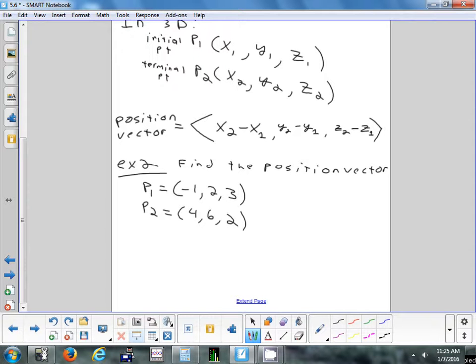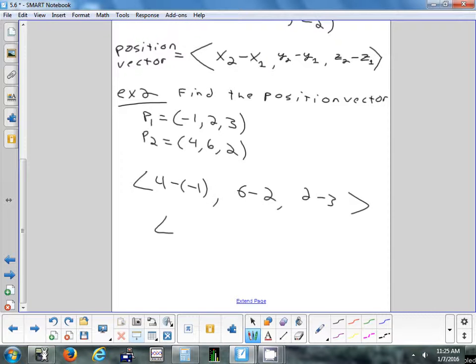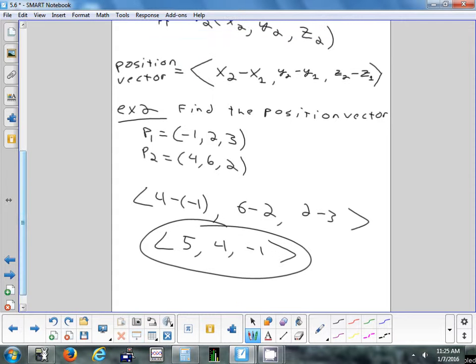All right, so we'll just set it up and see what we get. Allison, what's the first two things I'm going to subtract here? Four and negative one. Yep, four and negative one. It is going to become a plus one in a minute, but we'll deal with that. Next thing is six minus two. And Paige, my last component. Two minus three. So Derek, what's four minus negative one? Five. And then six minus two? Four. And two minus three? Negative one.